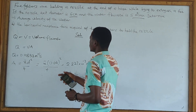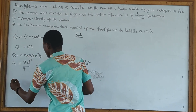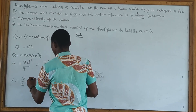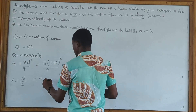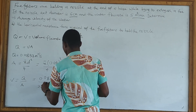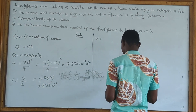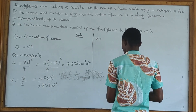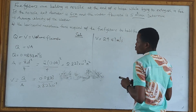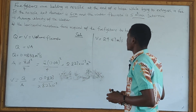Now, to find the average velocity, we make V the subject: V is equal to Q over A. So we get 0.0833 divided by 2.827 times 10 to the power negative 3, which gives us 29.47 meters per second. So for the first part of the question, the average velocity is 29.47 meters per second.